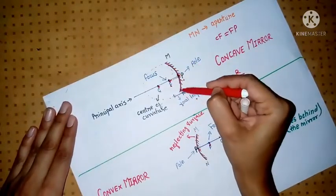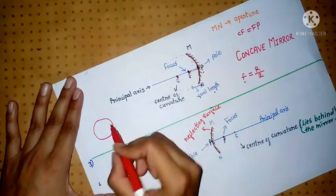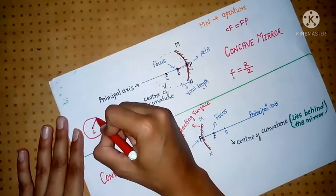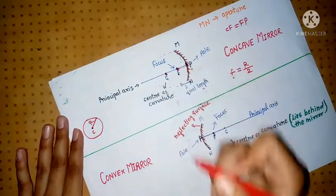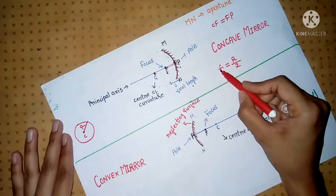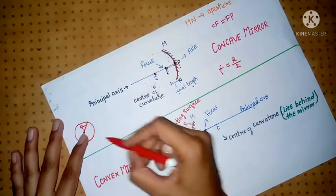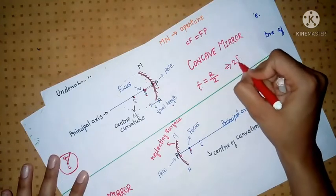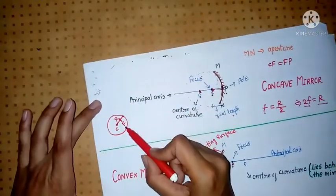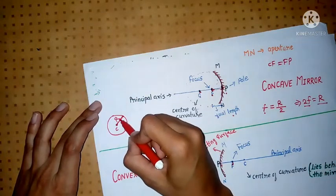Let us understand this — suppose we have a complete sphere. C is the center of that sphere. The distance from the center to the circumference is known as radius. The radius is two times the focal length, meaning the radius is two times this distance. We can write: 2f = R, that is, radius is two times focal length. So CF equals FP.